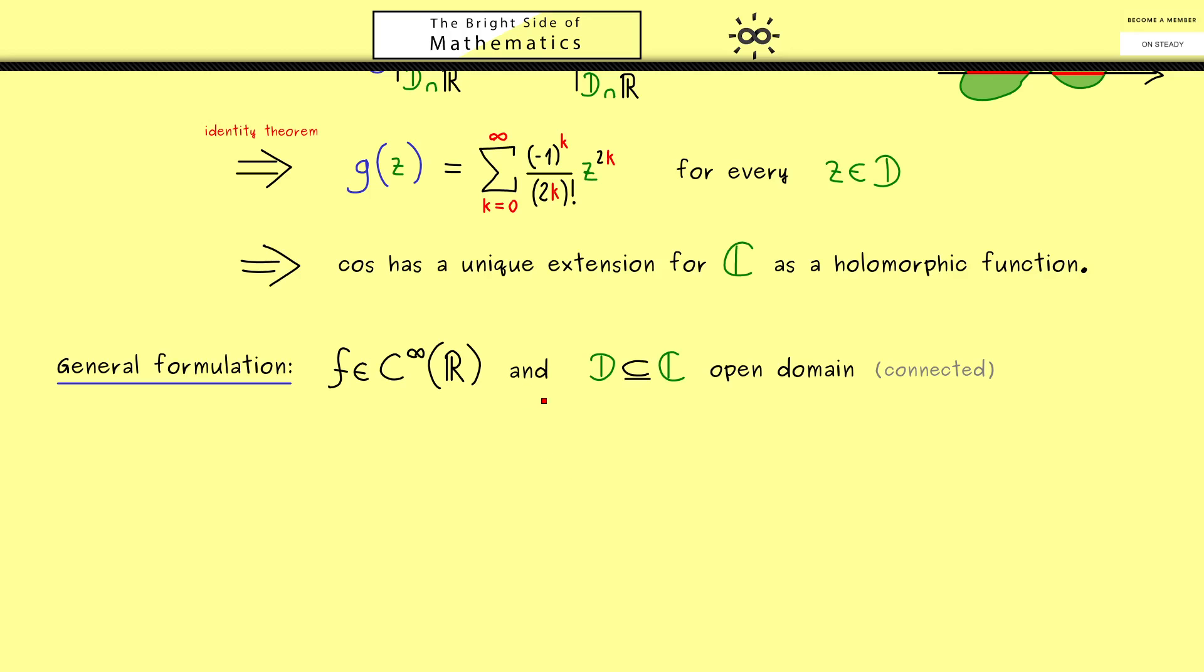In addition, as before, we choose an open domain, so a connected set in C. Moreover, we also already know that this D should have an intersection with the real number line, because only then it makes sense to extend the function f to a bigger domain.